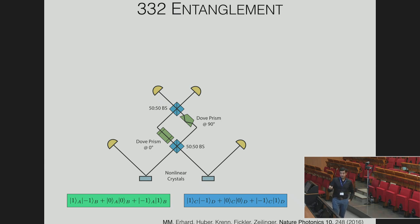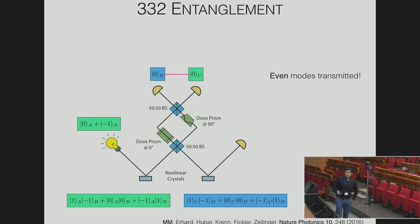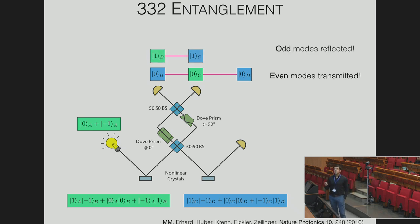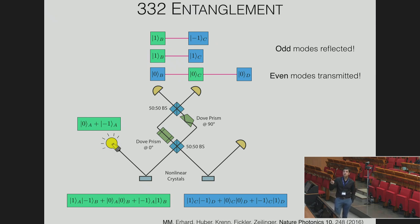Let's see what happens if we put this device between two high-dimensional entanglement crystals, each producing a three-dimensional state in modes {−1, 0, 1}. I'm going to use the fourth photon as a trigger to herald the presence of my three-photon entangled state. Post-selecting on the outcomes, there are only three possibilities. Combining them and looking more closely, you find this is exactly a three-three-two state — which, funnily enough, we were not planning to create. We were trying to create a three-dimensional GHZ state, but this was a good case of happenstance.